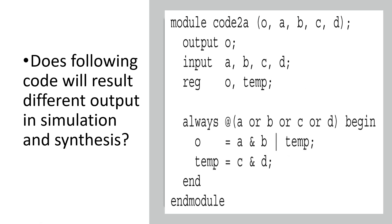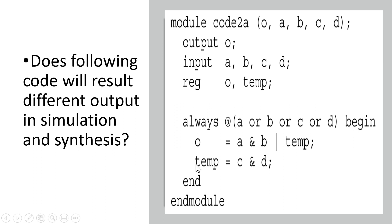Now the second question, which is the most important part of this video: does the following code result in different output in simulation and synthesis? The module has the same inputs a, b, c, and d and the same output o, with the same expected behavior as before. The only change made in this code is the ordering of statements inside the always block — the positions of the temp calculation and the output o calculation have been interchanged. Now output o is calculated first, and then temp is calculated.